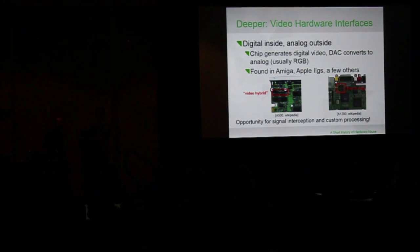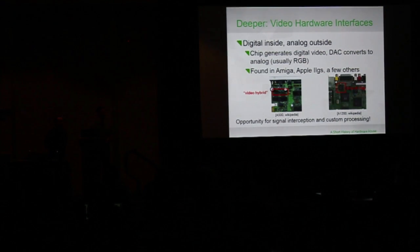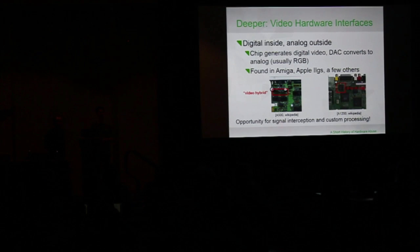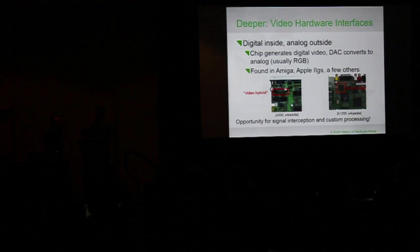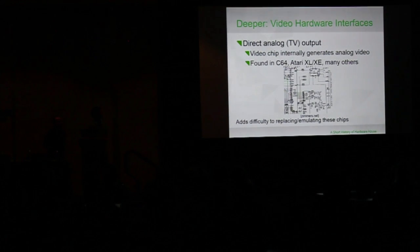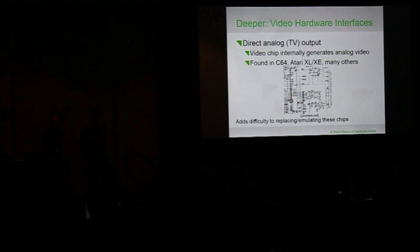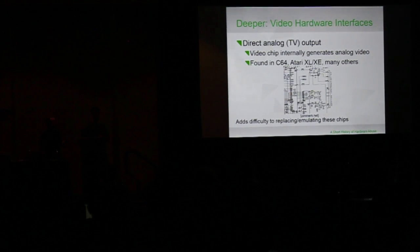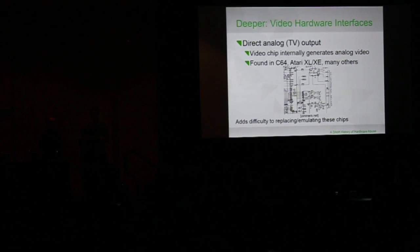An example of digital inside with analog outside: you were generating all the digital video — gorgeous on the inside. Direct TV out was found on many platforms and was very easy — just one cable to plug in. But in these cases the chip itself was doing the heavy lifting and you can't just steal the digital, because all the digital is on the inside. They're actually just outputting analog — they have the DAC built in.